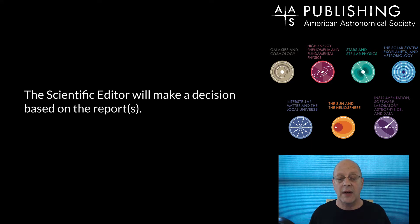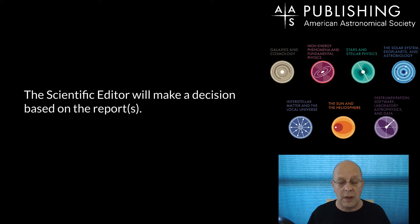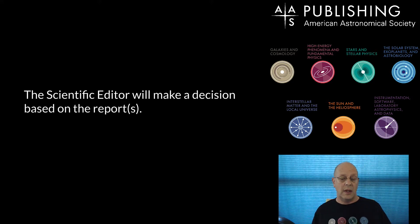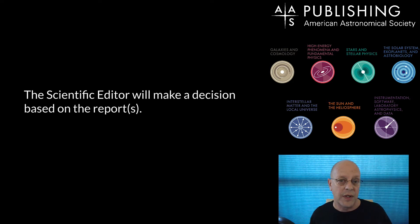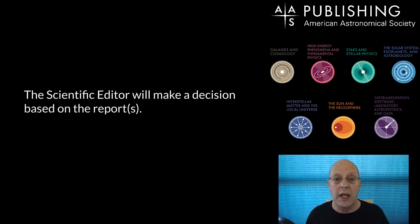The scientific editor is going to make a decision based on the report — sometimes plural, since there can be two referees on a paper. Remember that the goal of a referee is to give a recommendation. The referee is not accepting or requesting a revision, and is not making the final decision — that's the scientific editor's role. Referees are providing input into that decision.